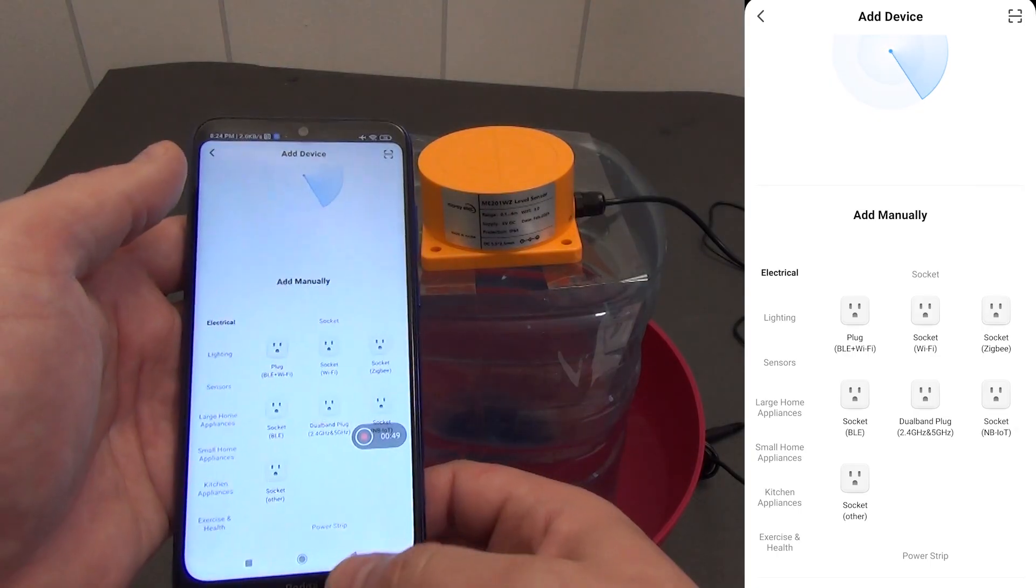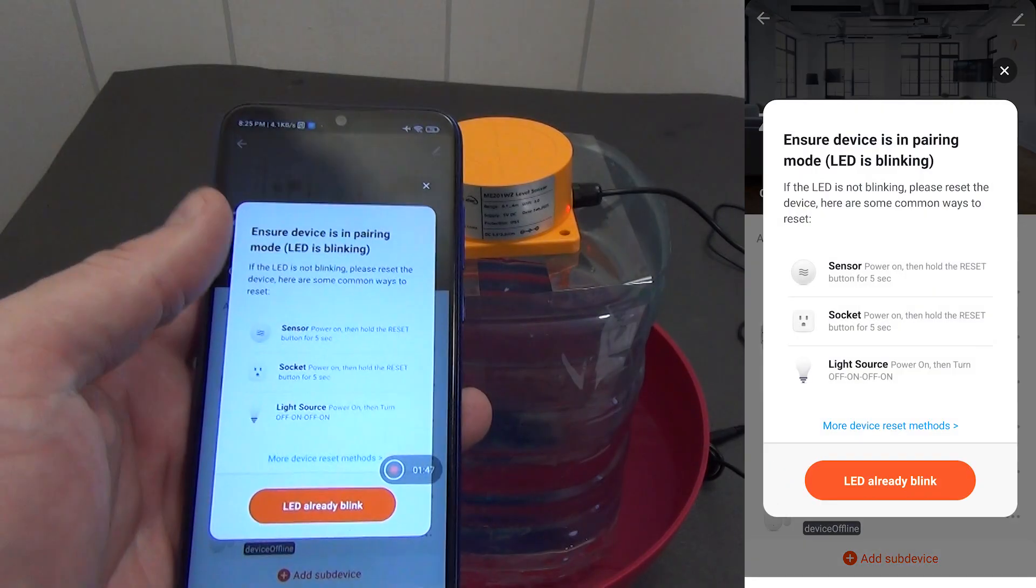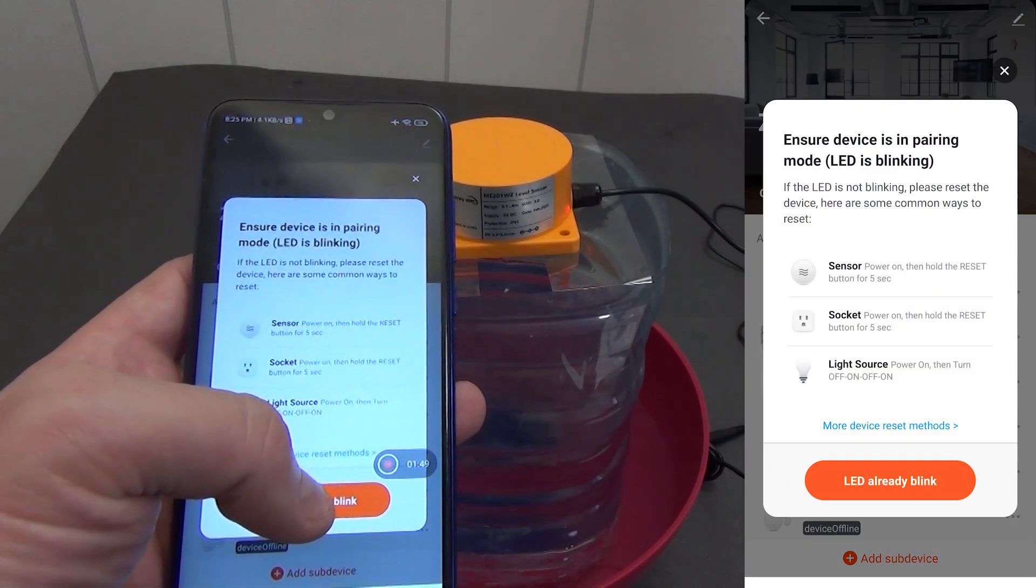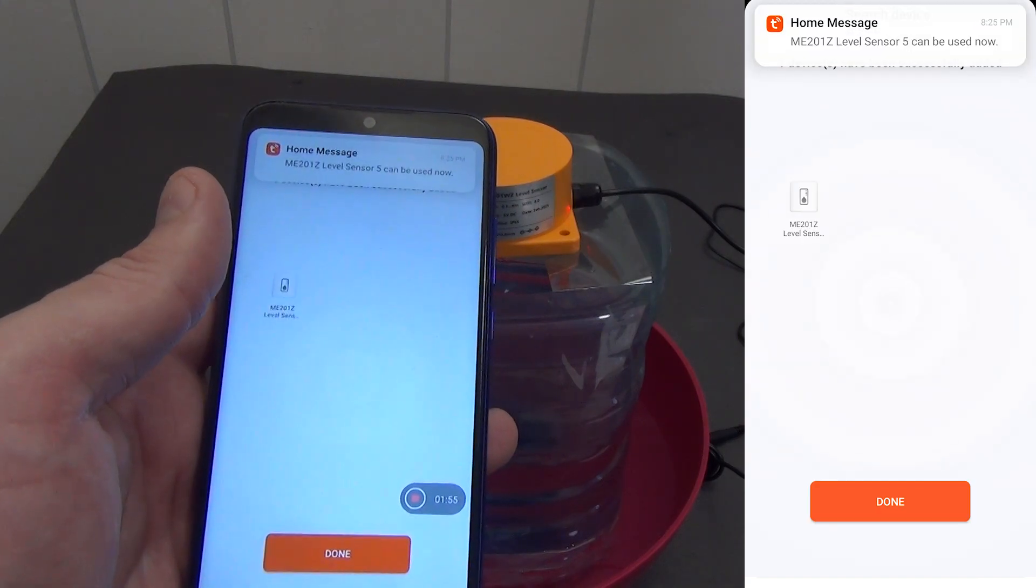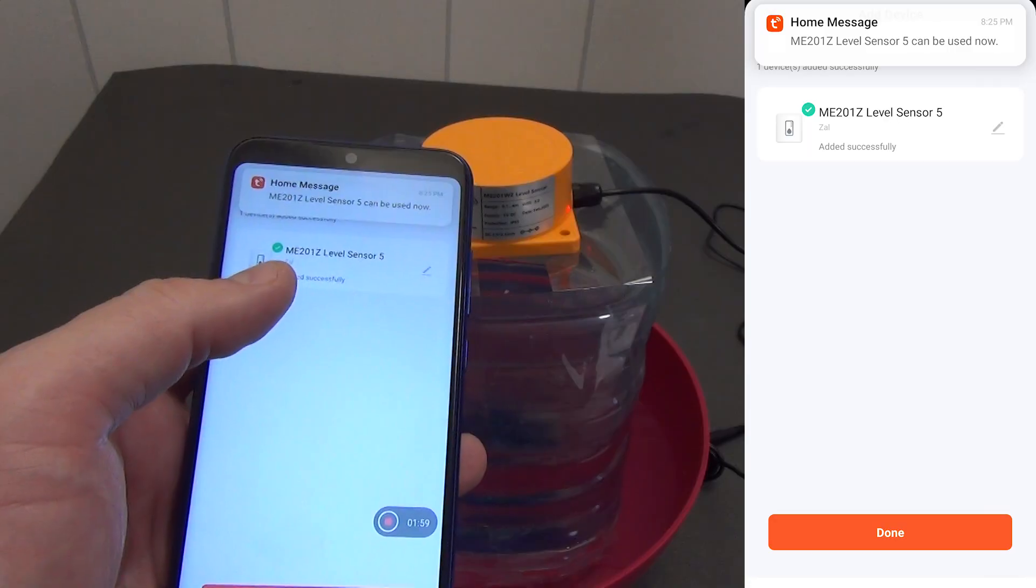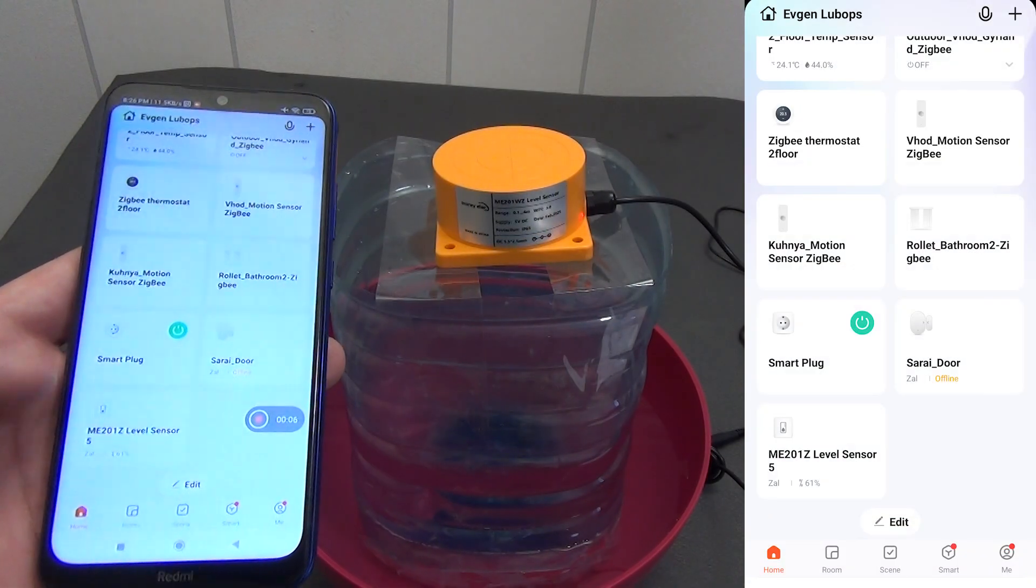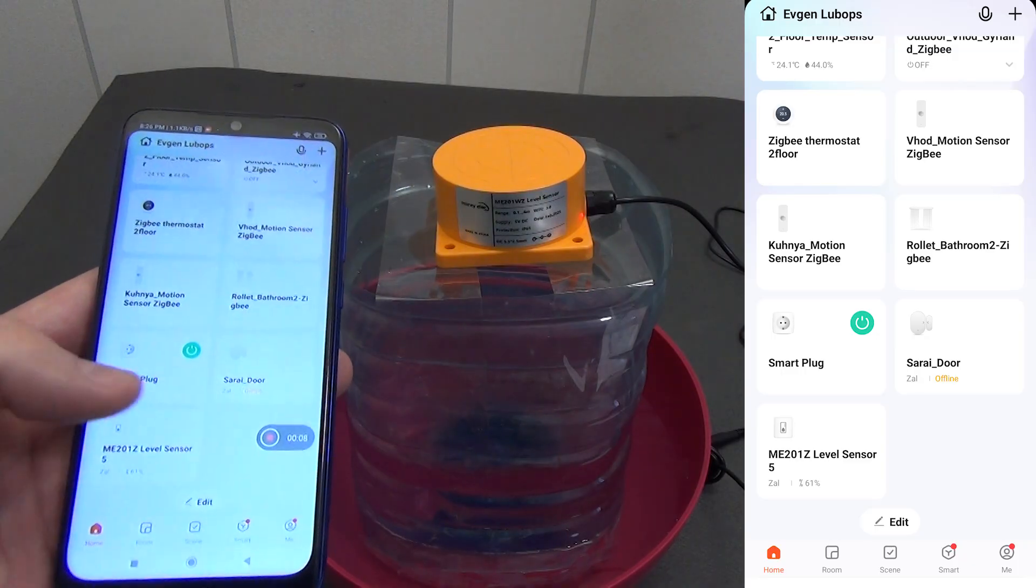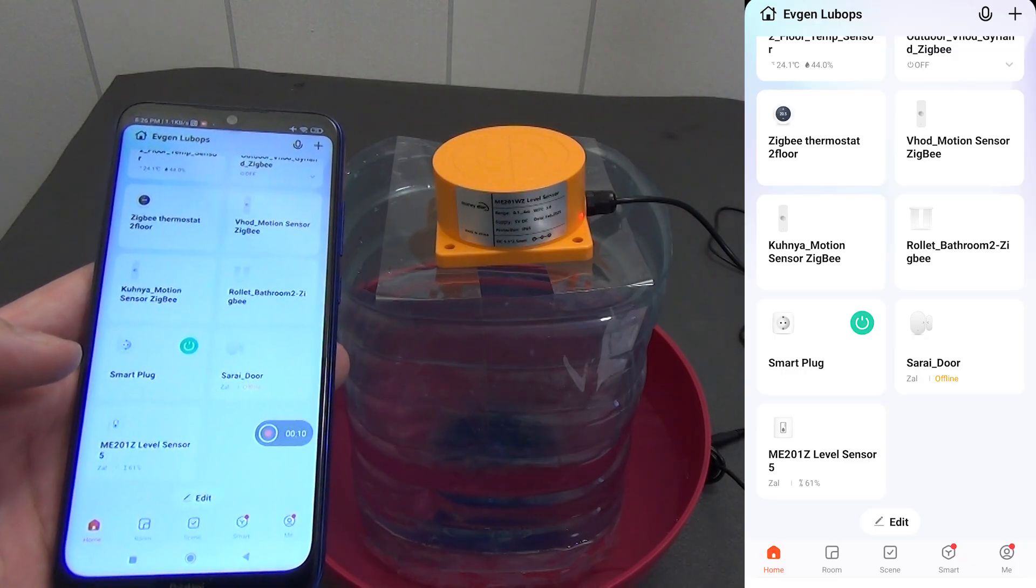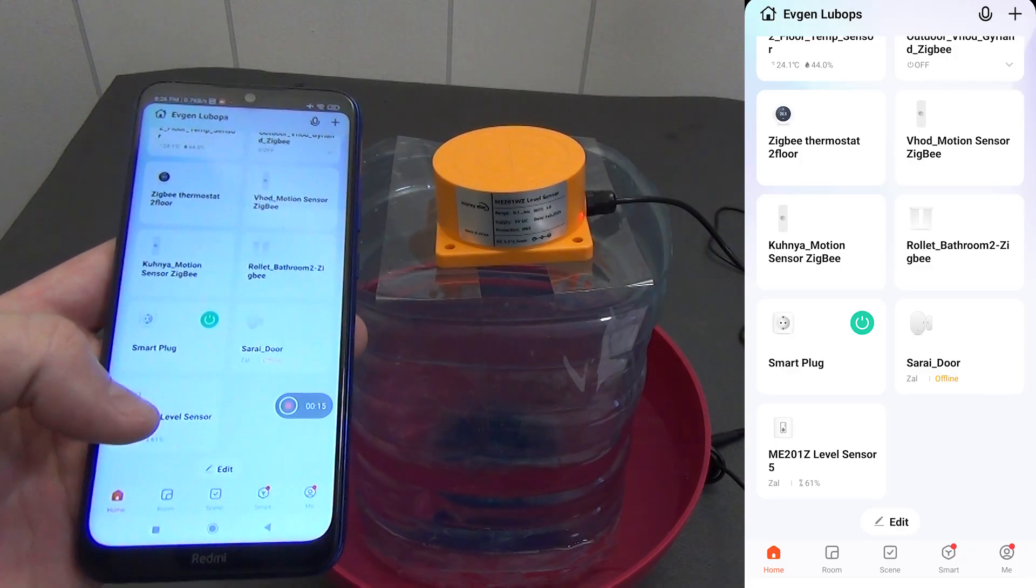Since I have a ZigBee version, I first go to the ZigBee gateway, here it is, and now I click add device. I make sure that the indicator blinks and after a few seconds the device is found and added to the Smart Home ecosystem. You can rename it or assign a virtual room. I like it when the necessary information is displayed immediately from the main menu of the program. So in this sensor we see the information we need, namely the filling of the tank. Now it is 61%.